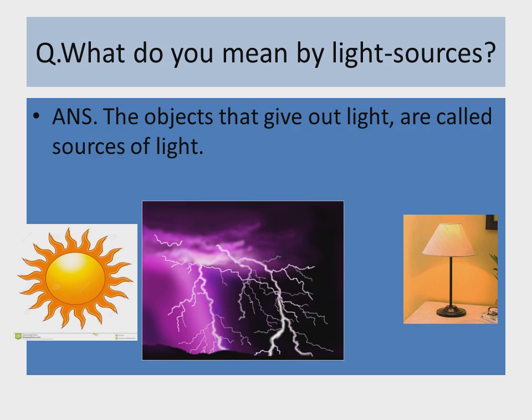On your screen you can see some pictures like the sun, lightning, and a lamp. The sun is the main source of light on the earth. When we need light at night time we use a lamp. So these three pictures are all giving light — these are the sources of light.